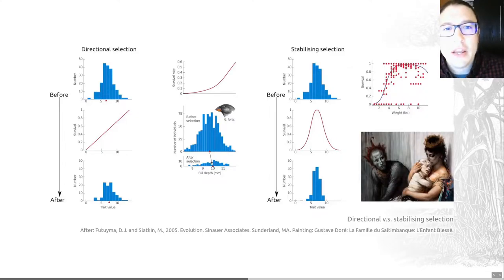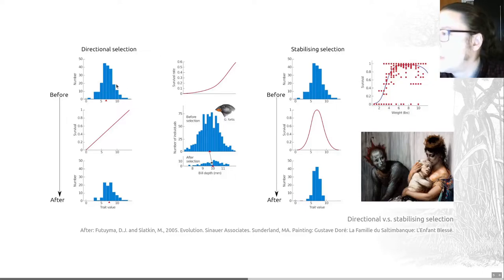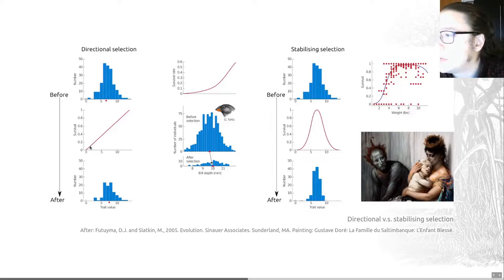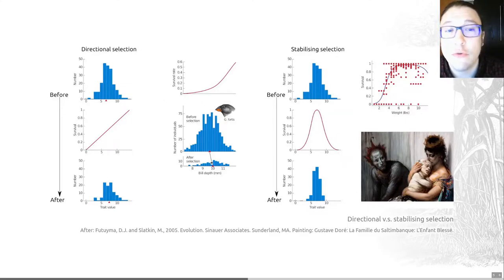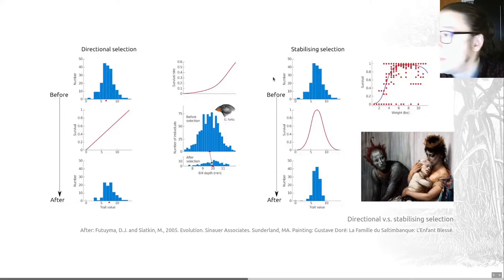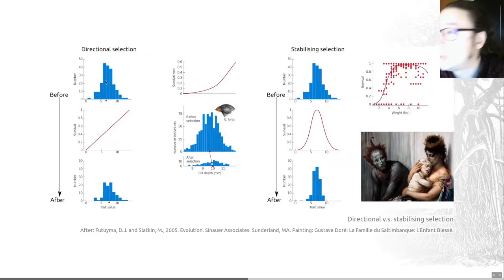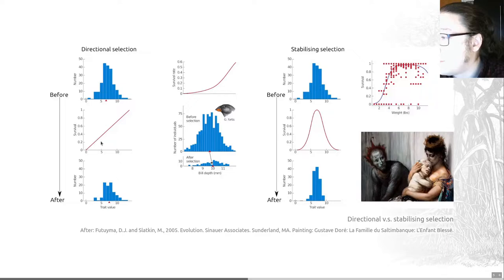If we move further beyond individuals, it's often useful to think about populations when we consider evolution. We can think about the variation in a trait value, as shown on the top graph here. Then if we think about the survival of individuals with this trait value, as shown in the middle graph, we can start to differentiate different forms of selection. Directional selection is when selection favours either an increase or a decrease in the mean of a trait, as shown by the difference between the top and bottom panels here, with fewer organisms with small trait values surviving, and therefore the mean moves towards the right.